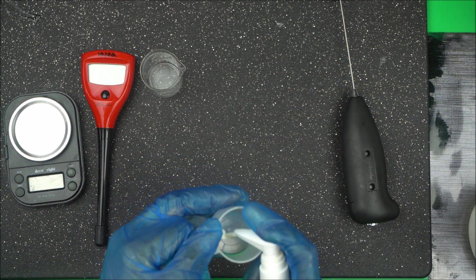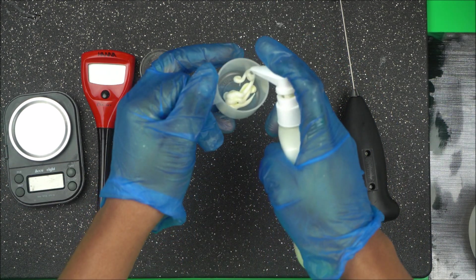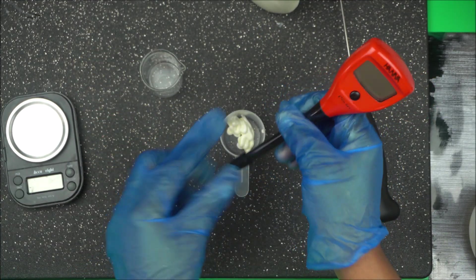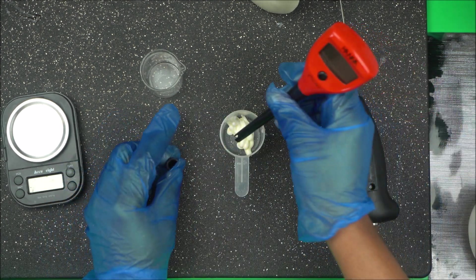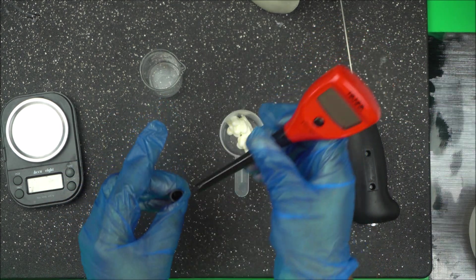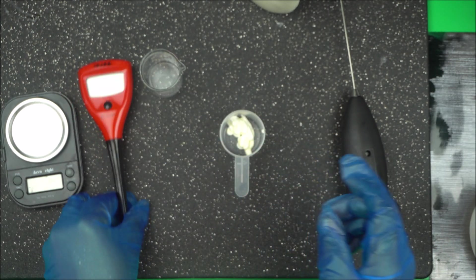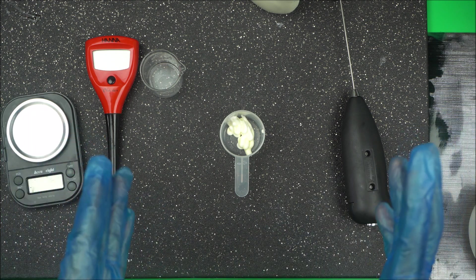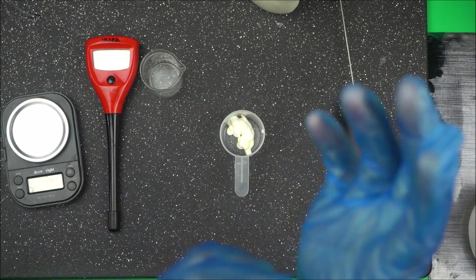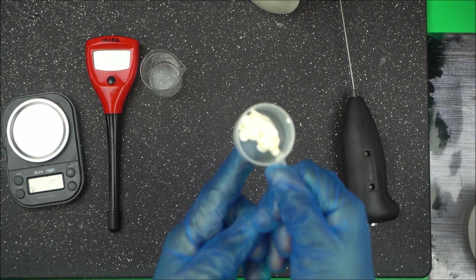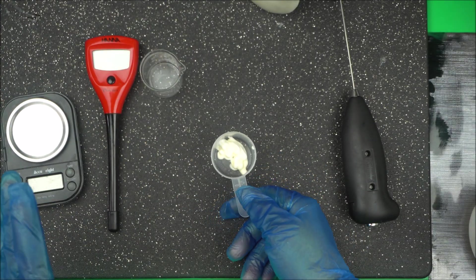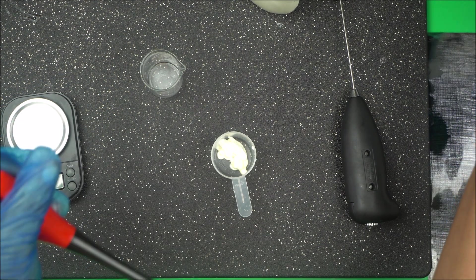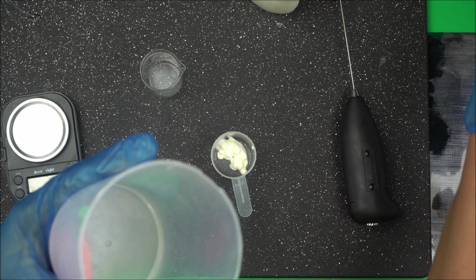They say just dip your pH meter into your product and check the pH like that. But if you have an emulsion like cream, lotion, shampoo, or anything that is in the form of an emulsion that's a bit viscous like this, there's no way you can check the proper pH by just dipping your pH meter into it.